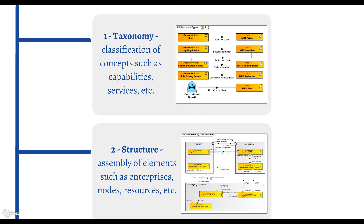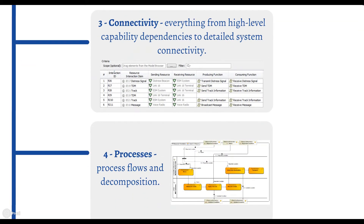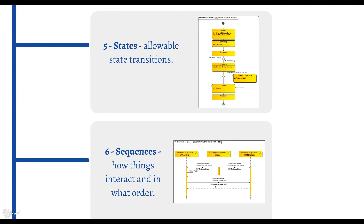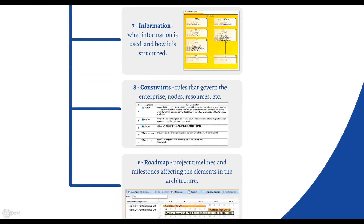Structure is an assembly of elements such as enterprises, nodes, resources, etc. Connectivity specifies everything from high-level capability dependencies to detailed system connectivity. Processes define flows and decomposition. States describe allowable state transitions. Sequences show how things interact and in what order. Information specifies what information is used and how it is structured. Constraints determine rules that govern the enterprise, nodes, resources, etc.